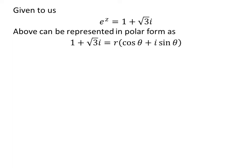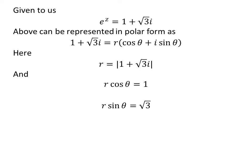The complex number 1 plus square root of 3 times iota can be represented in polar form as r times cosine of theta plus iota times sine of theta. Here r is equal to the modulus of 1 plus square root of 3 times iota, r times cosine of theta is equal to 1, and r times sine of theta is equal to square root of 3.